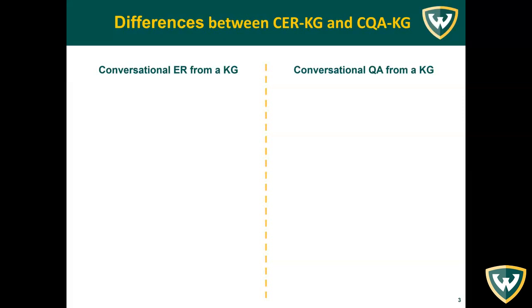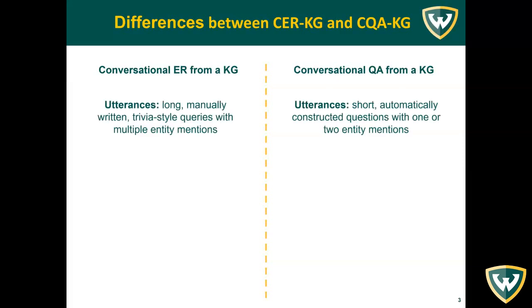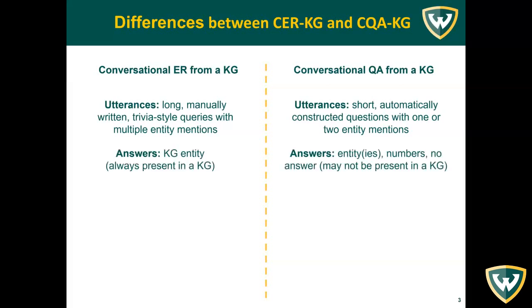In fact, there are several important differences between the two tasks. The utterances in our proposed benchmark for CER-KG are long, manually written trivia-style queries with multiple entity mentions. In contrast, the utterances in most benchmarks for CQA-KG are short, automatically constructed questions with one or two entity mentions. The answers in our benchmarks are entities that are always present in a knowledge graph, whereas the answers in most benchmarks for CQA-KG could be entities or numbers which may not be present in a knowledge graph.